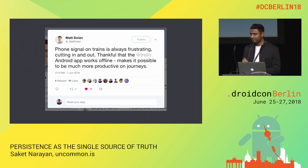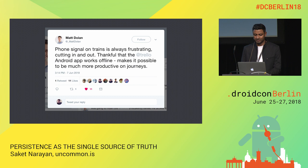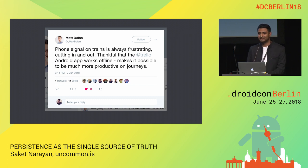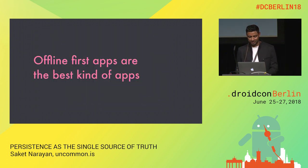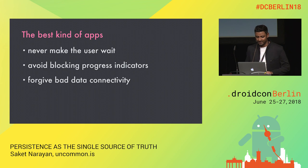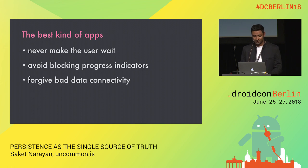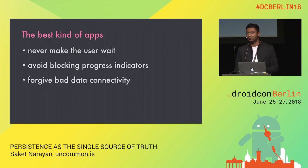Matt was appreciating how useful the Trello app is because of its offline-first design, and especially because it's still useful when Matt is travelling with bad connectivity. And I realised that this is it — this is what my talk is about. Offline-first apps are the best kind of apps. These apps are designed around the idea that getting blocked by progress indicators is not a good experience, and the user should be able to both produce and consume content without getting blocked anywhere.